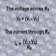The voltage across R sub S is equal to V sub I minus V sub Z. The current through R sub S is equal to V sub I minus V sub Z divided by R sub S.